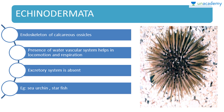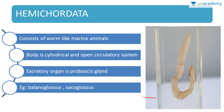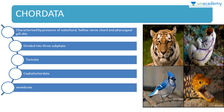Echinodermata have an endoskeleton of calcareous ossicles (plates). Their most distinctive feature is the presence of a water vascular system, which helps in locomotion and respiration. The excretory system is absent. Examples: sea urchin and starfish. Next, Hemichordata consists of worm-like marine animals with a cylindrical body, open circulatory system, and proboscis gland as the excretory organ. Examples: Balanoglossus and Saccoglossus.